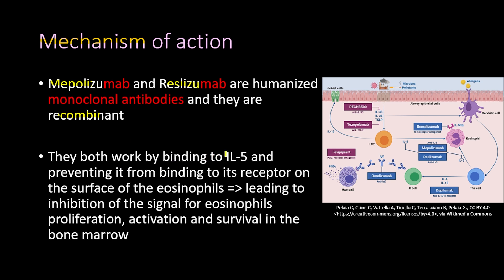Both drugs work by binding to interleukin-5 and preventing it from binding to its receptor on the surface of the eosinophil. This leads to inhibition of the signal for eosinophil proliferation, activation, and survival in the bone marrow. As shown in the picture here, mepolizumab and reslizumab bind interleukin-5 and prevent it from binding to the eosinophil, meaning eosinophils would not proliferate, activate, or survive.